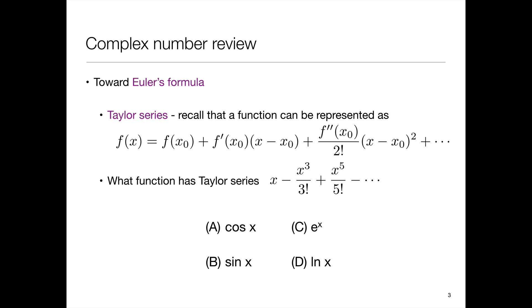And what about this one? x minus x cubed over 3 factorial plus 5 cubed over 5 factorial and so on with alternating odd powers and factorials. Which one of these options does that Taylor series represent?